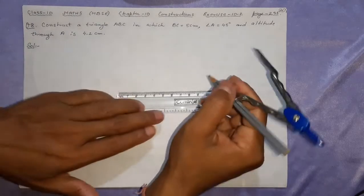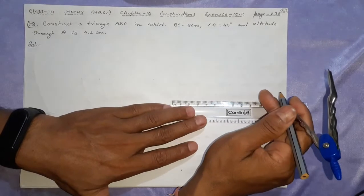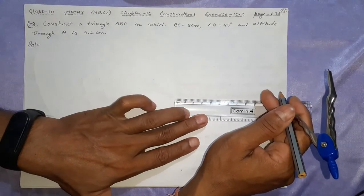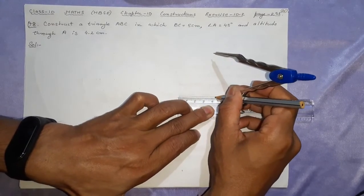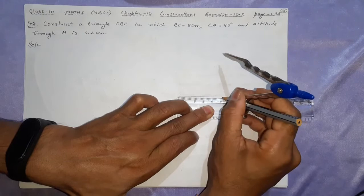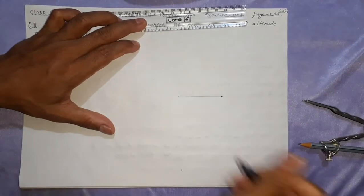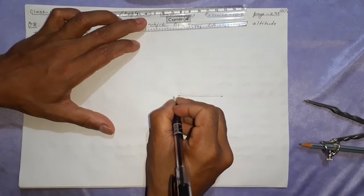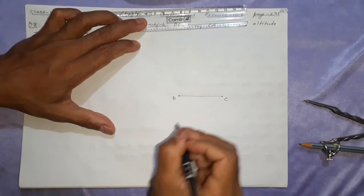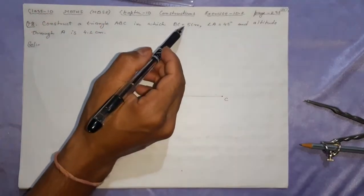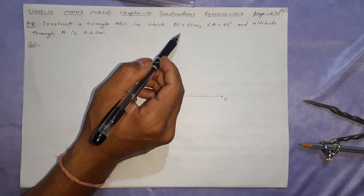First draw BC equals to 5 centimeter. You will need some space here, so we will be using somewhere here. From 1 to 5 means you will stop here at 5 exactly. This will be called B, this will be called C. Now this was done. You can see BC is equal to 5, so I have taken the first part.